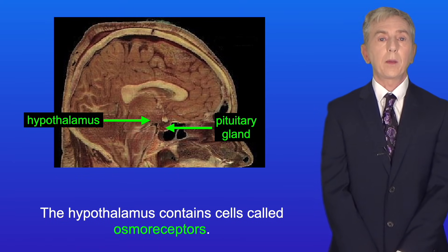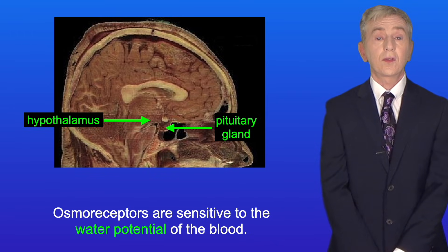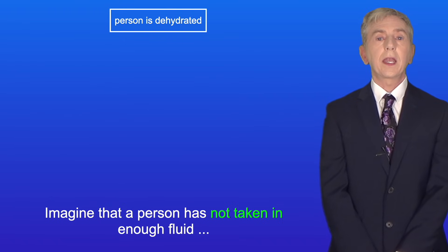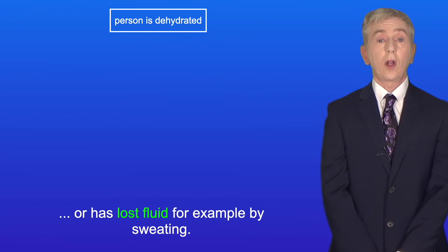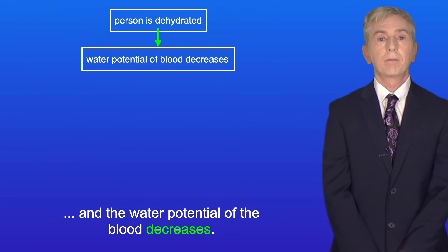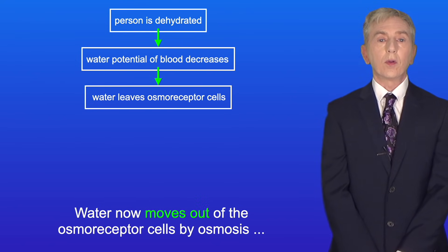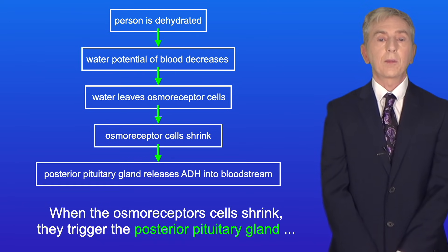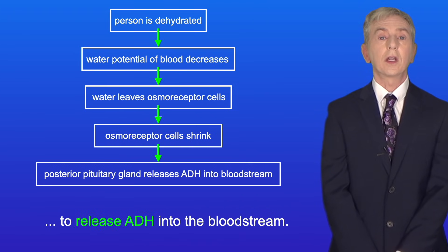The hypothalamus contains cells called osmoreceptors, which are sensitive to the water potential of the blood. Imagine that a person has not taken in enough fluid or has lost fluid, for example by sweating. This person is now dehydrated and the water potential of the blood decreases. Water now moves out of the osmoreceptor cells by osmosis, causing them to shrink. When the osmoreceptor cells shrink, they trigger the posterior pituitary gland to release ADH into the bloodstream.